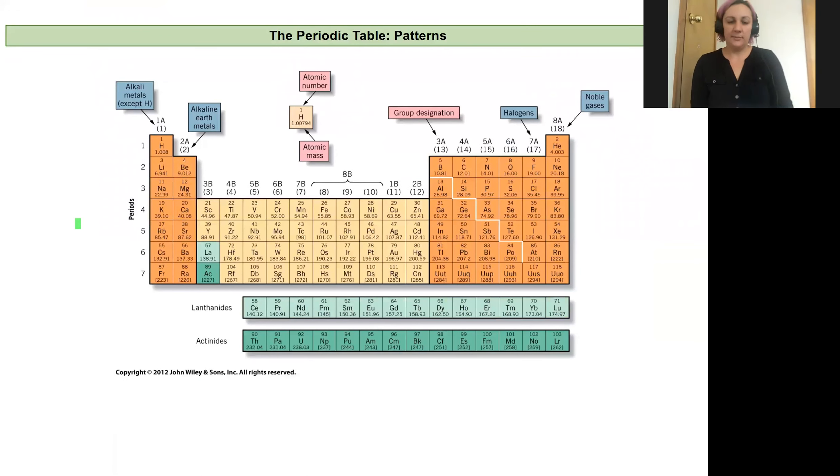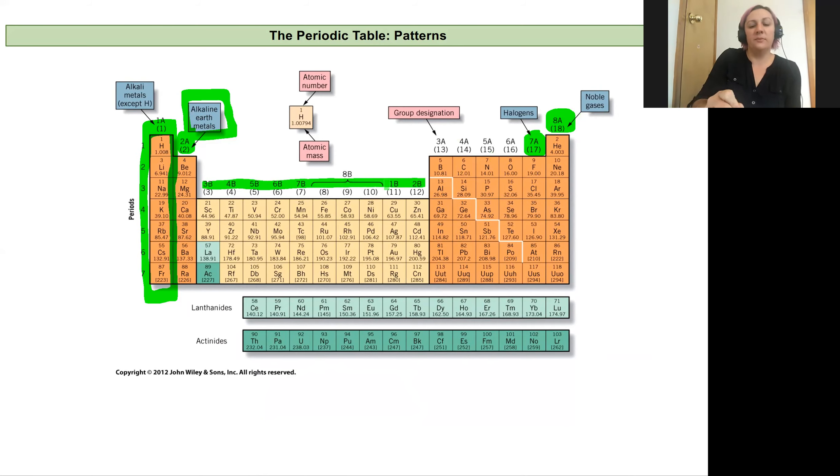Some of our groups come with names and similar properties. Others we don't really have named. So within our main elements, our group one A, these ones right here, these are our alkaline metals with the exception of hydrogen, because it's not a metal. Next to it, we have our alkaline earth metals, which is this group two A, and they have different properties within them. Then we don't have great names for the ones over here in the main group, but our 7A, we call the halogens and 8A, the noble gases. These ones right here, we call the transition metals. And then we have our lanthanide series and actinide series right here.